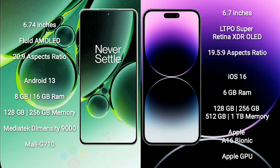OnePlus Nord 3 comes with 8GB or 16GB RAM, and 128GB, 256GB, or 512GB internal storage. It features a MediaTek Dimensity 9000 processor and Mali-G710 GPU.